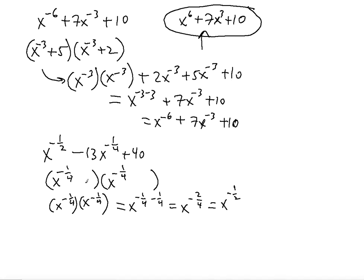Now we need factors of 40. Because of the minus sign in front of 13, we need two negative factors. Negative 5 times negative 8 gives positive 40, and negative 5 plus negative 8 gives negative 13. So we choose negative 5 and negative 8.